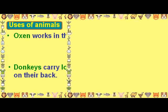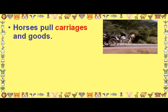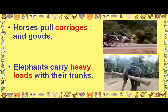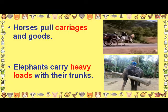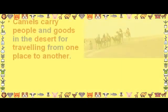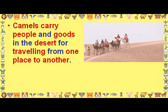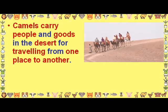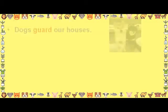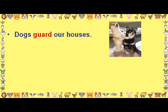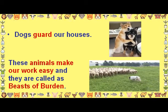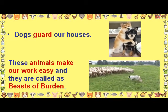Uses of animals: Oxen work in the fields. Donkeys carry loads on their back. Horses pull carriages and goods. Elephants carry heavy loads with their trunks. Camels carry people and goods in the desert for traveling from one place to another. Dogs guard our houses. These animals make our work easy and they are called beasts of burden.